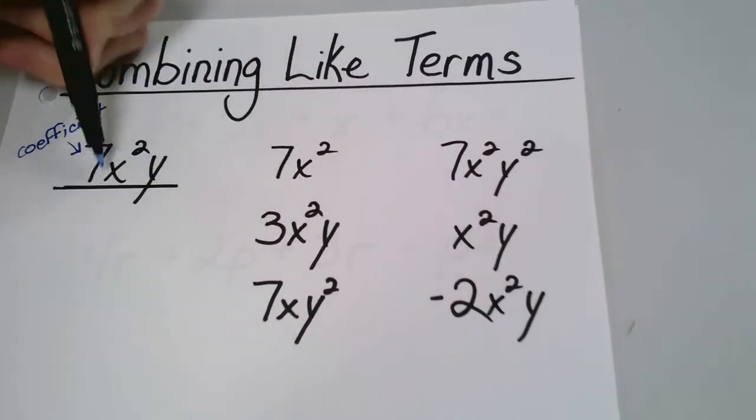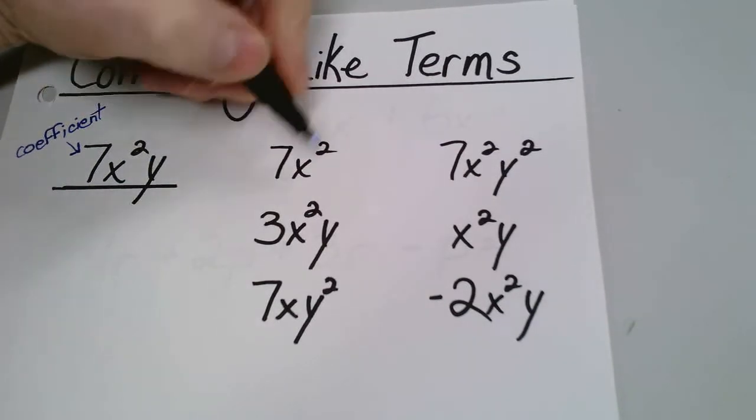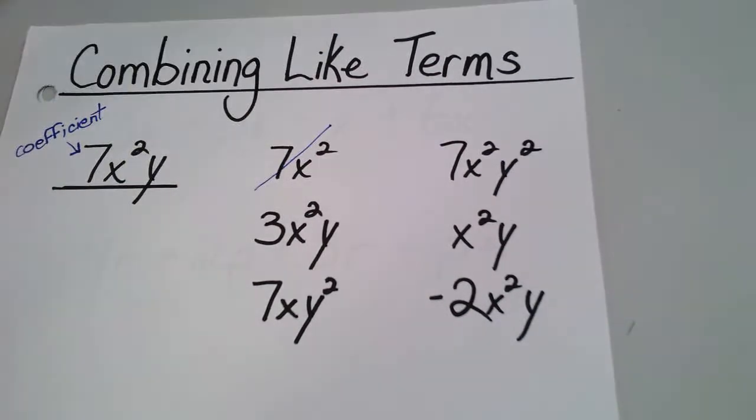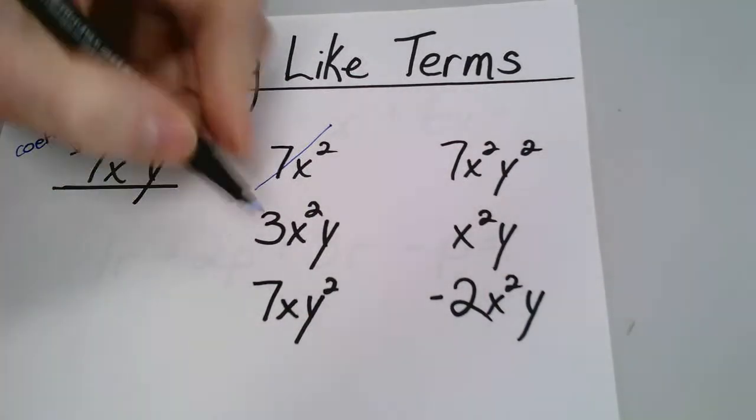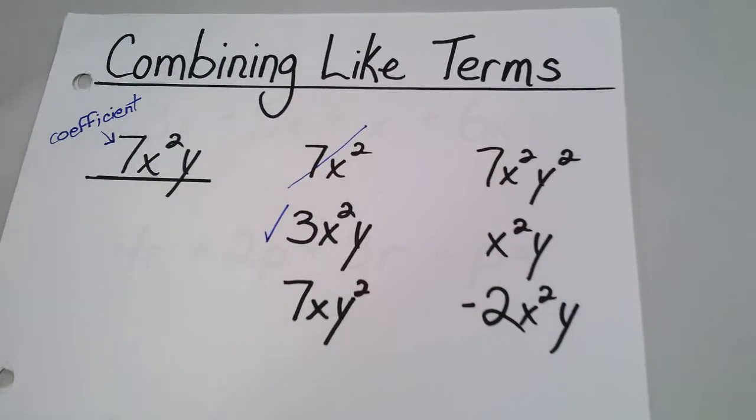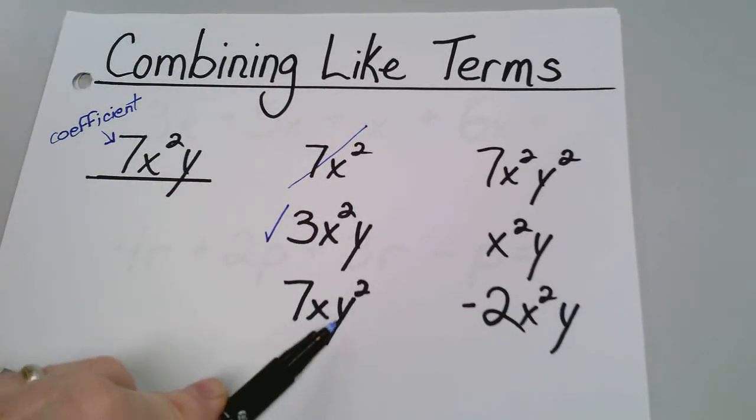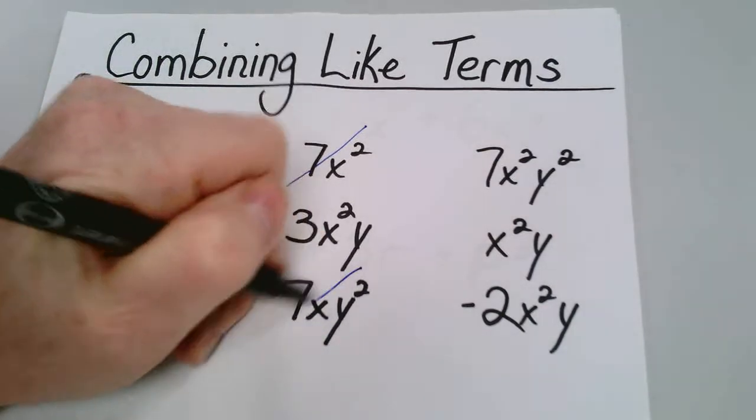So let's look at the first one. We're looking for x²y. This one just has x², so that does not combine. Second one, x²y, that one does. We have like terms or the same family name. Next one, xy². No, it's kind of backward from that, so that one doesn't work either.